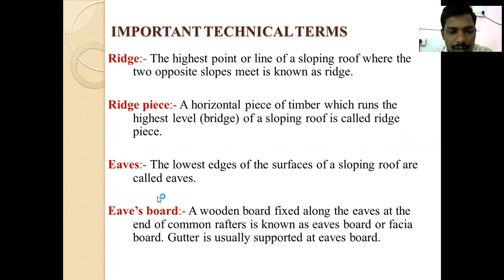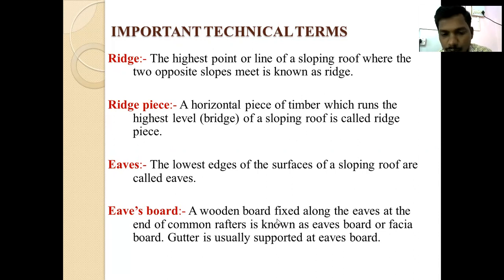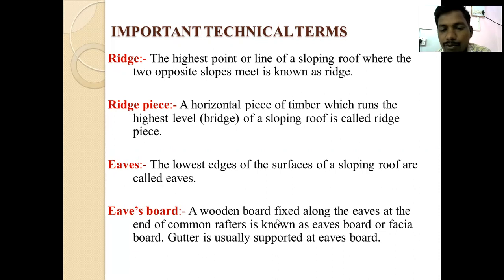The eaves board, also called fascia board, is a wooden board fixed along the eaves at the end of common rafters. Gutters are generally supported at the eaves board. Whatever rainwater is there, to collect it we provide gutters, which are connected to the eaves board.